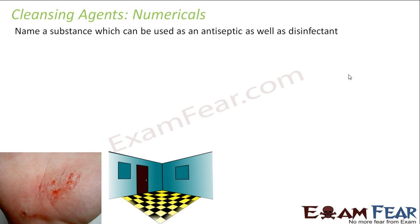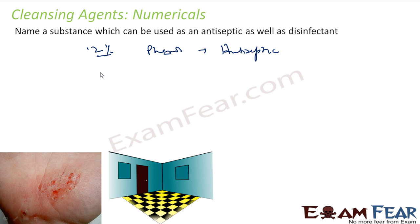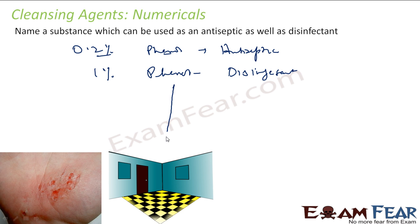Name a substance that can be used both as an antiseptic and a disinfectant. Phenol: at 0.2% concentration it acts as an antiseptic, while at 1% concentration it is used as a disinfectant.